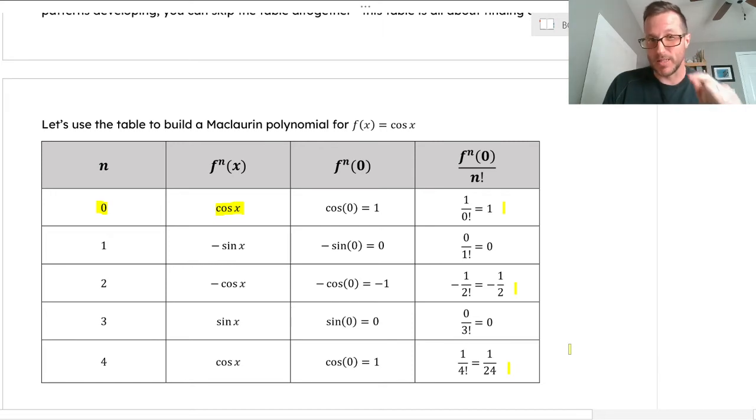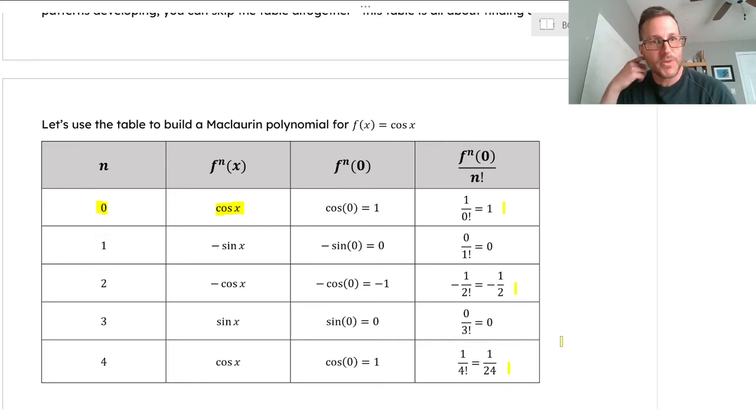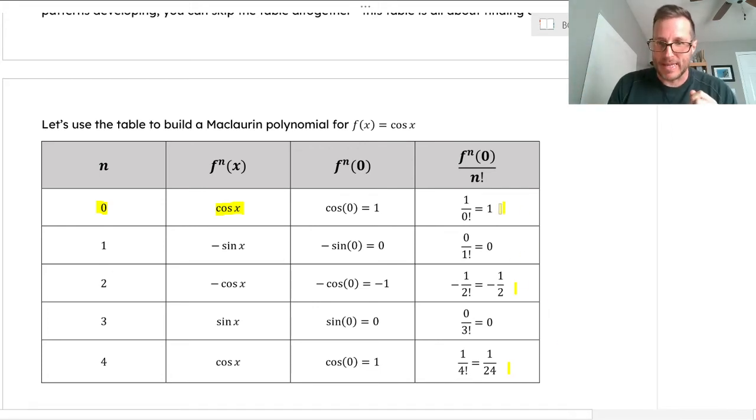This table is not the polynomial. Rather, it's just a way to figure out the coefficients. You probably might notice a pattern for what's happening here. Every other one is zero because we get to sine. But then what's going to happen with the derivatives of cosine? Every four is just going to be recycled. That means you're going to have positive, then negative, then positive, then negative—it's going to switch back and forth.